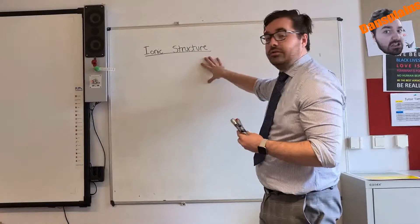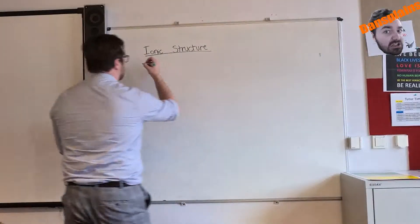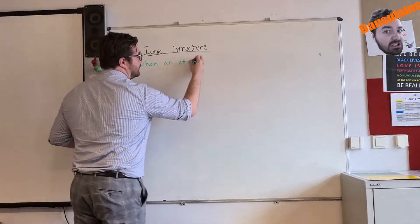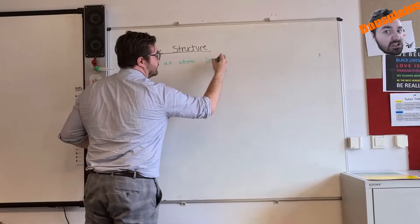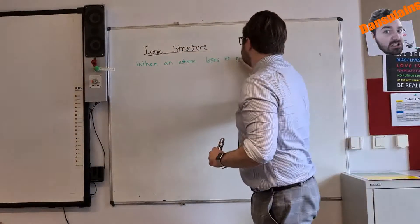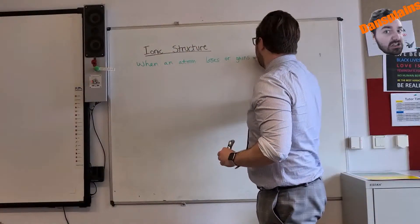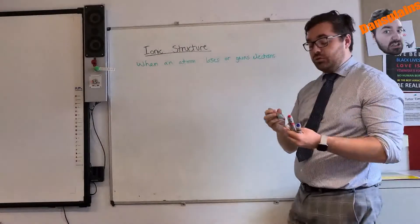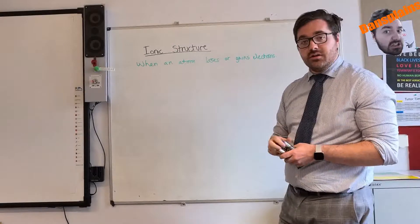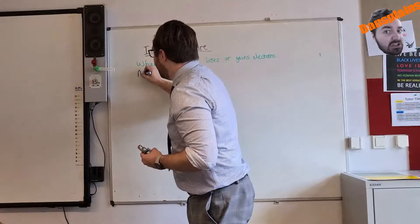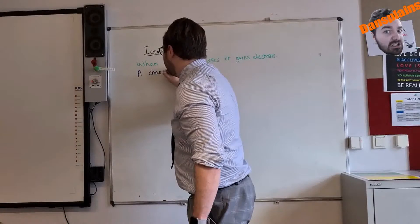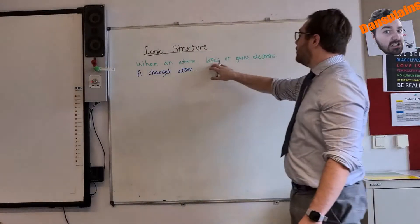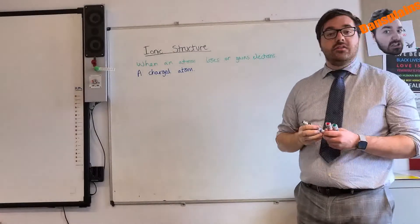Now an ion is when an atom loses or gains electrons. Electrons have a thing called negative charge. That means an ion is a charged atom, but it's all about whether it loses or gains the electrons.